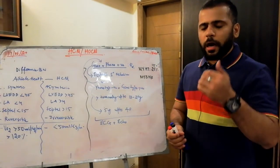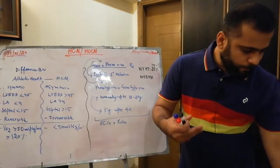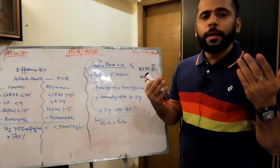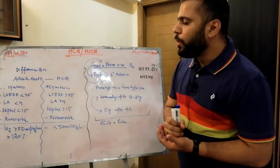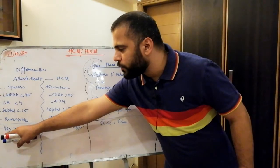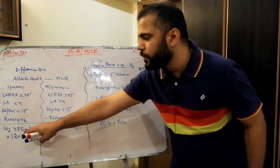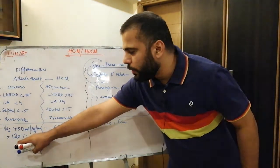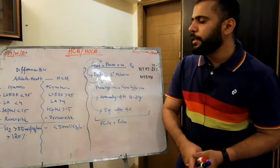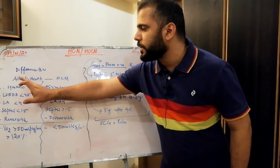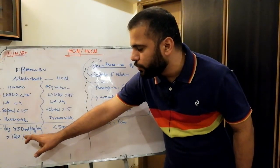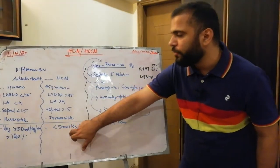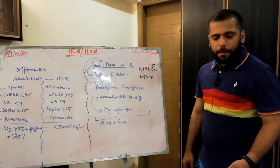A newer tool for differentiation is cardiopulmonary metabolic testing. If VO2 max is more than 50 mL/kg/min or more than 120% of predicted, it is more likely athlete's heart. If VO2 max is less than 50 mL/kg/min, the patient probably has hypertrophic cardiomyopathy.